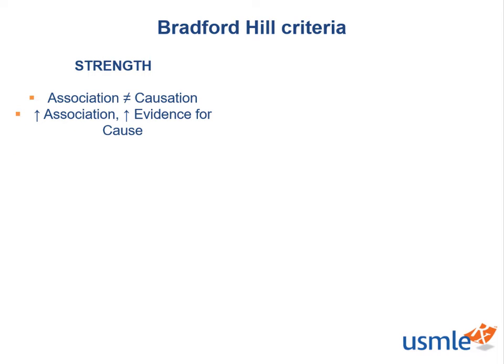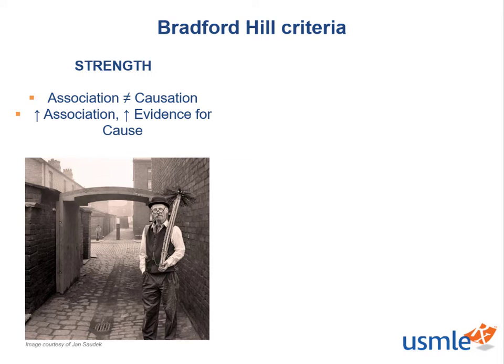The first criterion is strength. While association does not equal causation, the larger the association, the more likely the relationship is to be causal. Let's use the same example that Hill did. In the UK, Percival Pott examined the incidence of scrotal cancer in chimney sweeps — the very same ones that dance around the screen in Mary Poppins. He found a very strong strength of association: the incidence of scrotal cancer in chimney sweeps was 200 times greater than in other jobs. Increased exposure to chimney soot was found to be the causal factor.